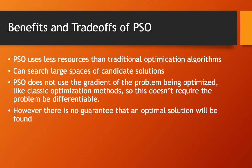Some of the benefits and trade-offs of particle swarm optimization is that it uses less resources than some of the other traditional algorithms, and you can search large spaces of candidate solutions.